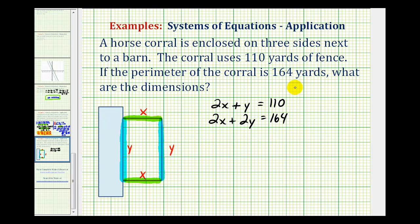So let's multiply the first equation by negative one, and then we'll leave the second equation the same. So we'd have negative 2x minus y equals negative 110. The second equation stays the same.